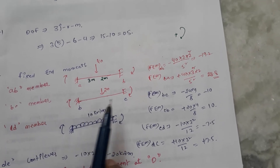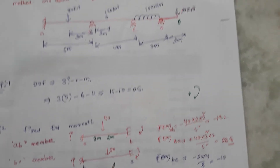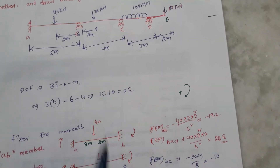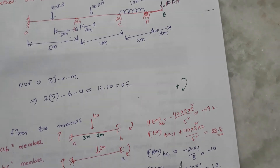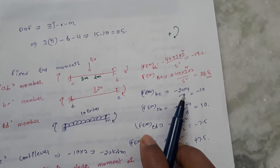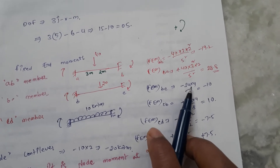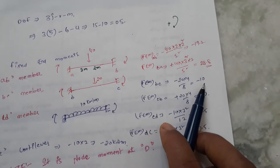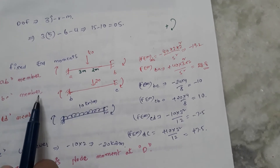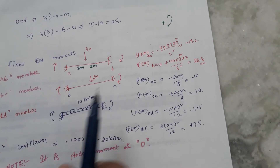For BC with symmetrical loading at 4 meters, the formula is P·l by 8. So: minus 20 times 4 divided by 8, which gives minus 10. The left-hand end is negative and the right-hand end is positive.